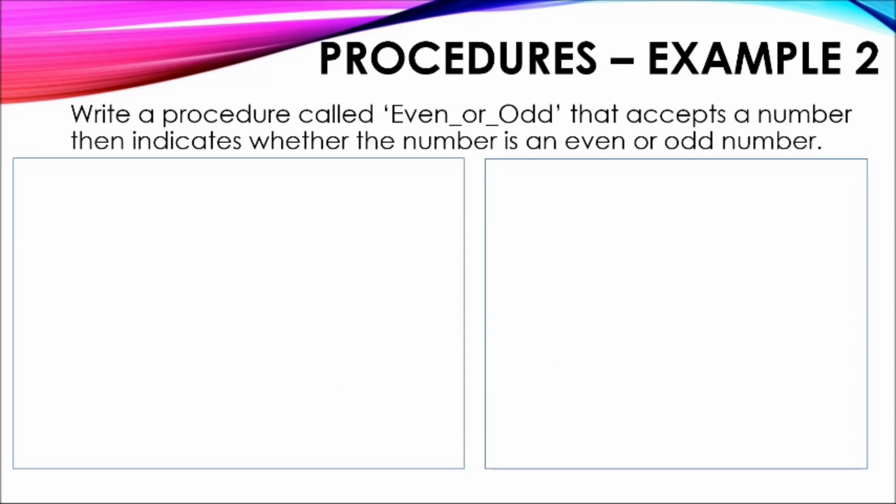Procedures Example 2: The following example indicates the need of a procedure called EvenOrOdd that accepts a number and then indicates whether the number is even or odd. Note that the term 'accepts a number' means that this value should be passed to the procedure. Recall the process used in the last example and try to identify key actions required for this solution. Pause the video and identify the process of defining and calling the required procedure.